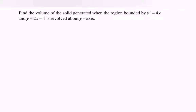Find the volume of the solid generated when the region bounded by y squared equals 4x and y equals 2x minus 4 is revolved about the y-axis. First, find the points of intersection between the two curves.